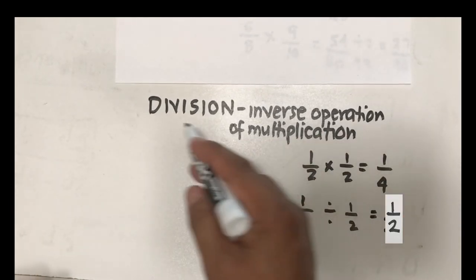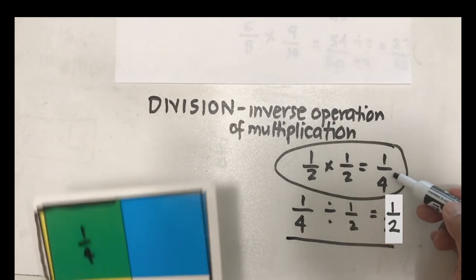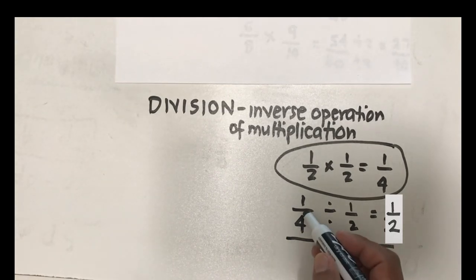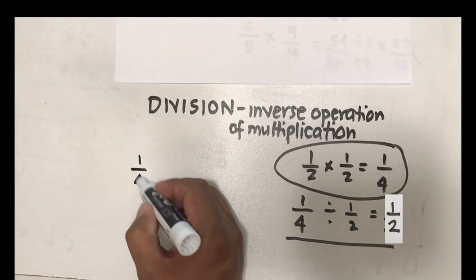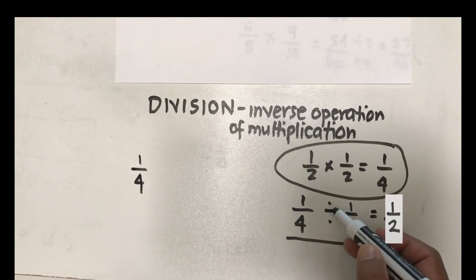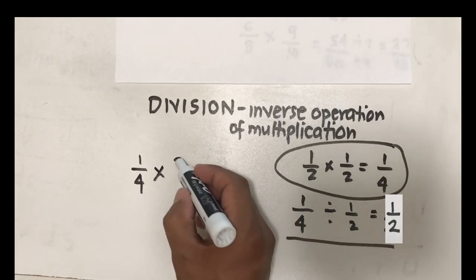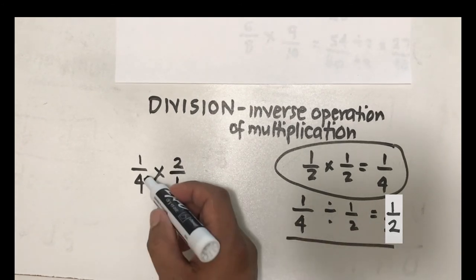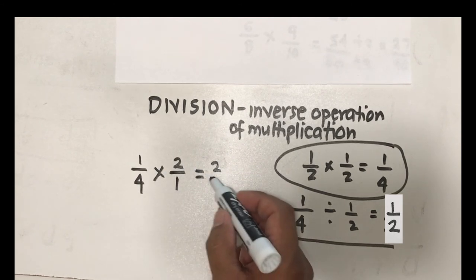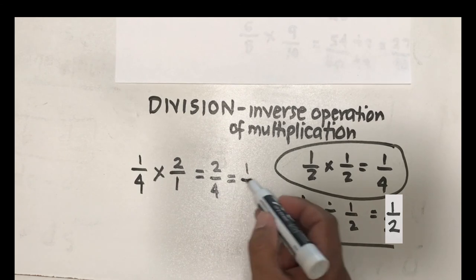As I said, division is the inverse operation of multiplication. If I have this division problem, I can turn it into a multiplication problem and apply what we know about the rule for multiplication of fractions. If I have one-fourth divided by one-half, I change this division into multiplication but get the reciprocal of one-half, which is two over one. Then one times two is two, four times one is four — two over four — and reducing to lowest term by dividing by two gives one-half.